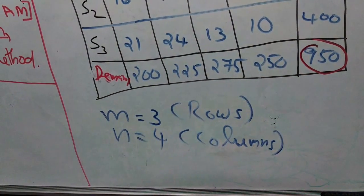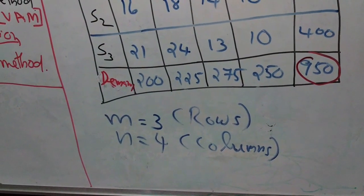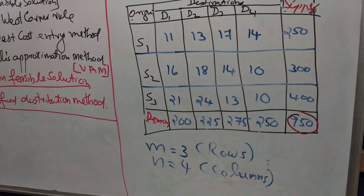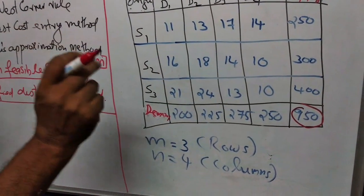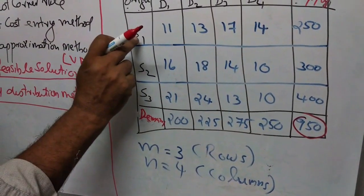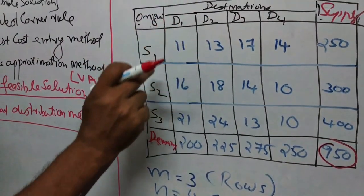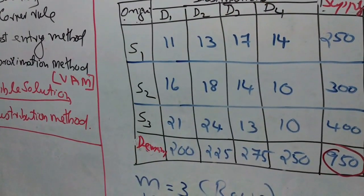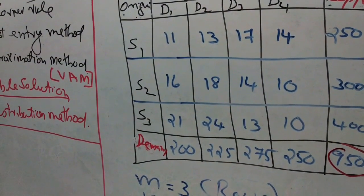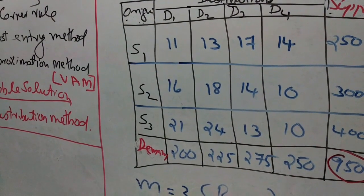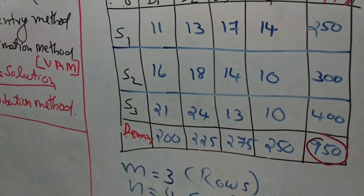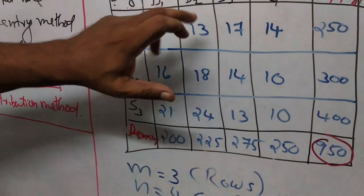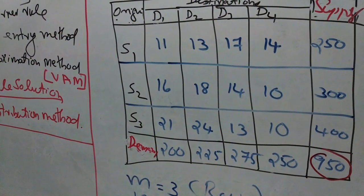It is called a balanced problem — demand is equal to supply. We are going to determine how much is to be transported from the first supply center to the first destination, how much from S1 to D2, S1 to D3 at the minimum cost. The objective is minimization of cost — this is a transportation problem and we are solving it.